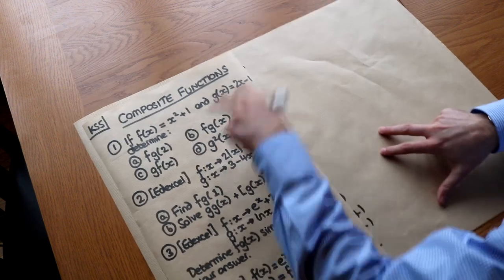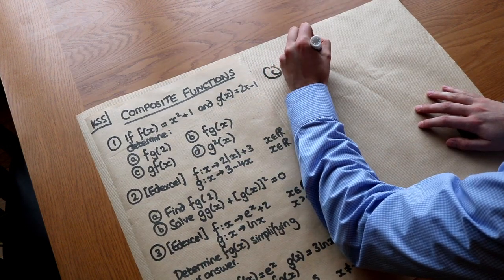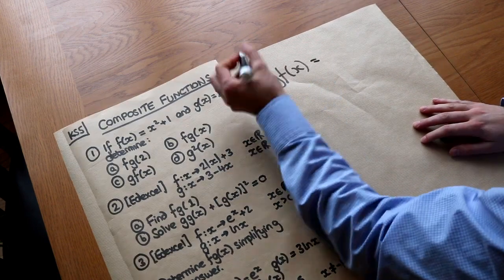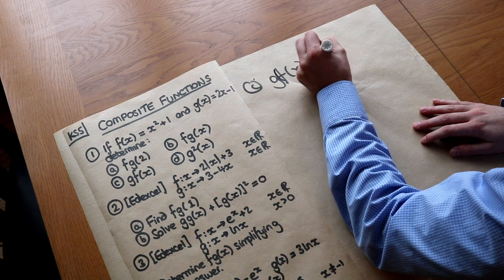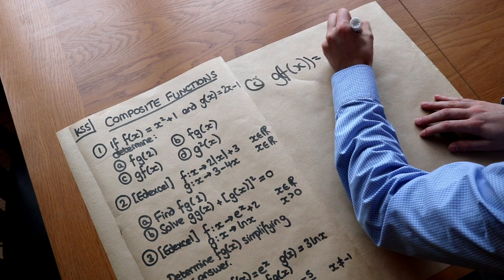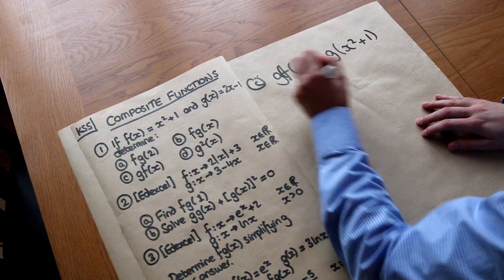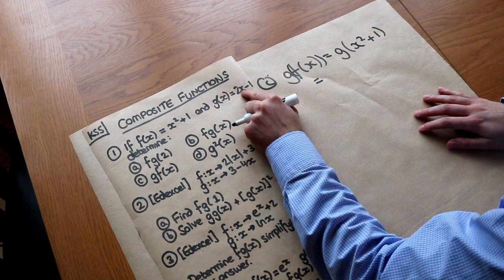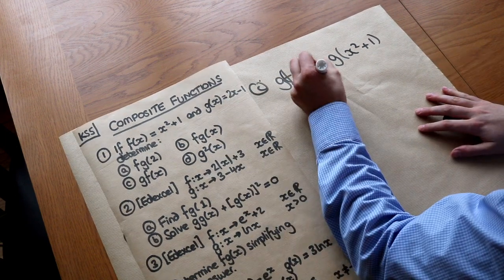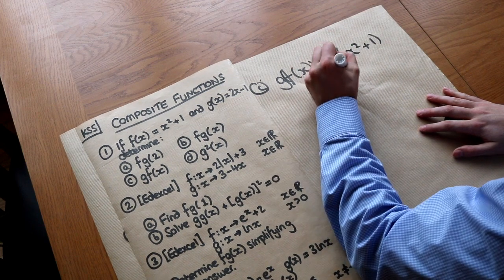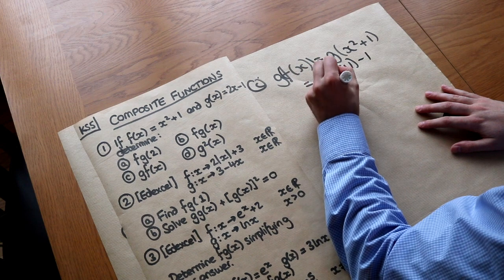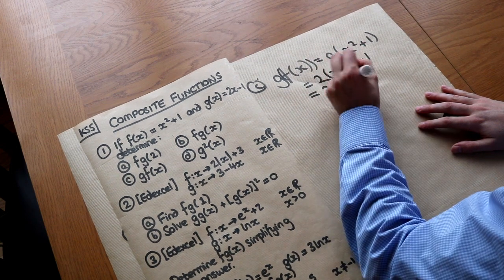For part c, we want to find g(f(x)). Note that g(f(x)) is not necessarily the same as f(g(x)). We do g of f(x), where f(x) = x² + 1. In g(x) we replace each instance of x with x² + 1, giving 2(x² + 1) − 1. Expanding: 2x² + 2 − 1 = 2x² + 1.